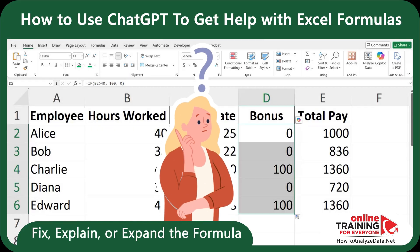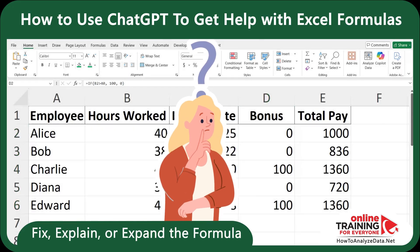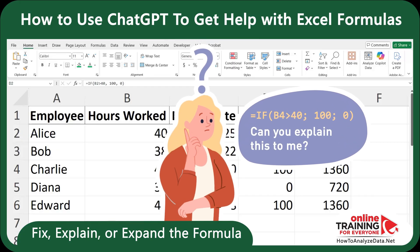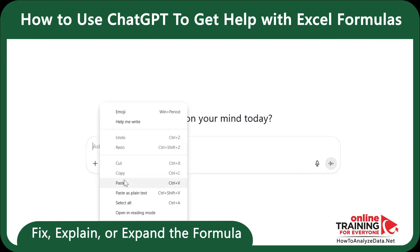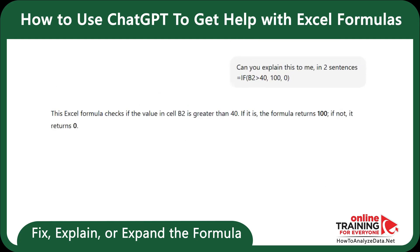But what if the formula doesn't work the way you expect, or you're not sure how it works at all? You can copy the formula back to ChatGPT and ask, "Can you explain this to me?" Let's copy the formula from Excel and paste it into ChatGPT. You can also add, "Explain it to me in two sentences," so the response isn't too verbose. Here's what ChatGPT returned: this Excel formula checks if the value in cell B2 is greater than 40. If it is, the formula returns 100; if not, it returns 0.